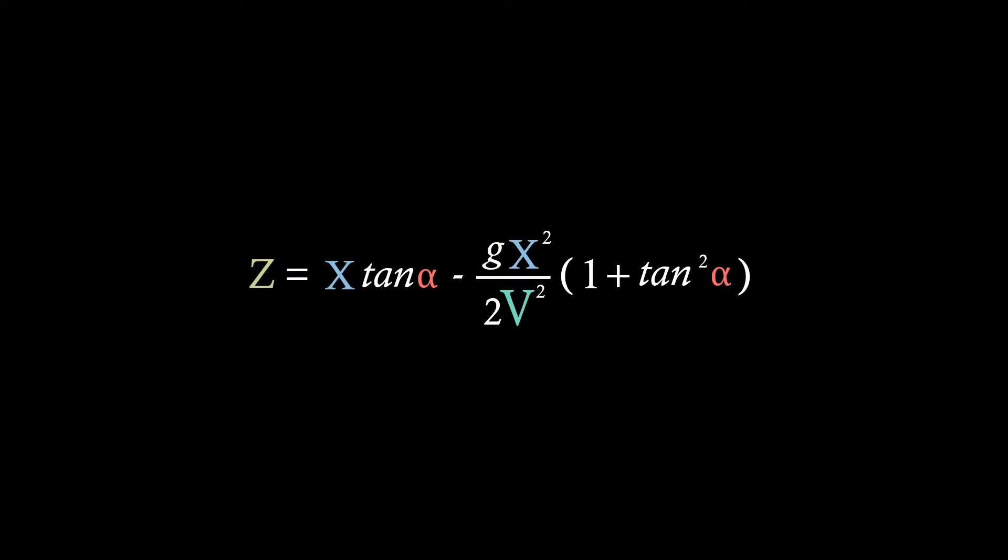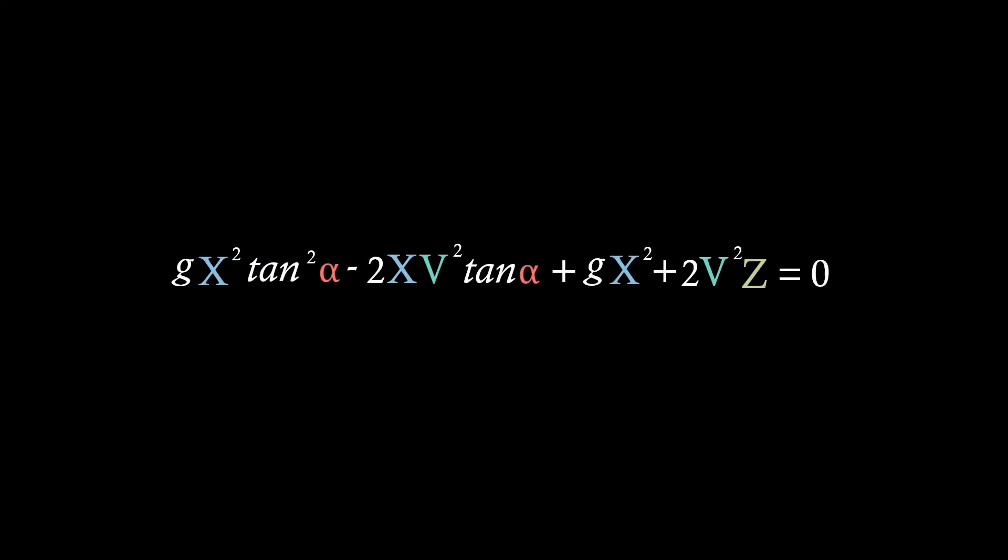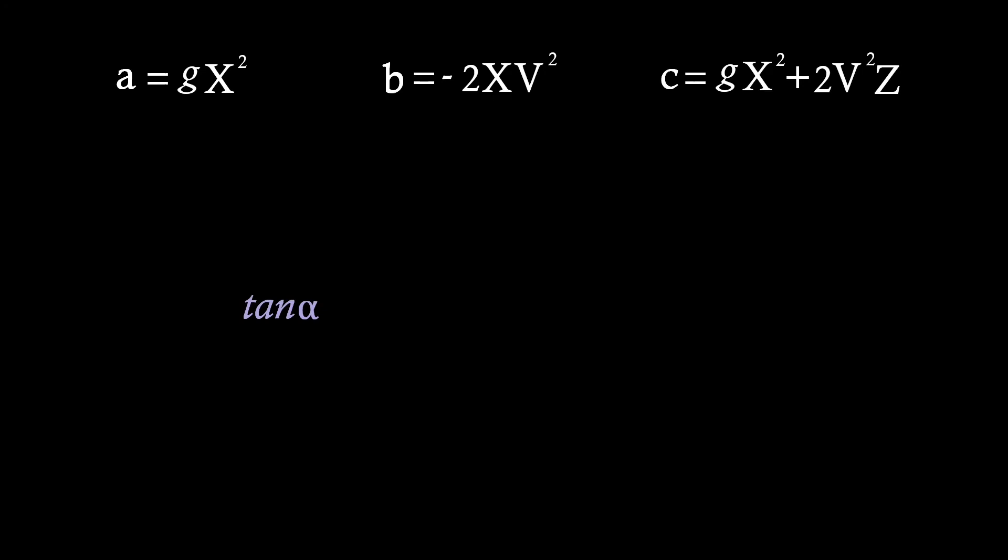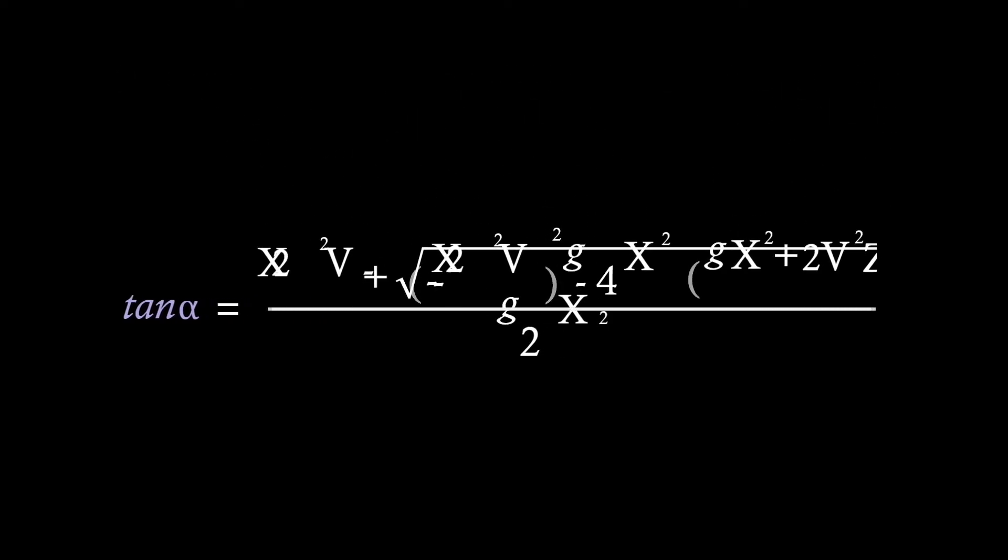Now we're going to do some simplification. So if we multiply our whole equation by 2v squared, then expand our brackets, and finally move all of our terms all onto one side, we see here that we've actually got a quadratic equation in terms of tan alpha. So if we draw our a, b and c coefficients, and then use the quadratic formula as shown here, we start to form a solution for tan alpha.